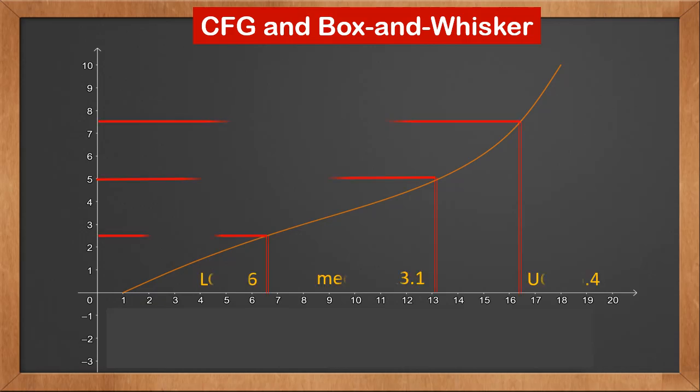We know that we can find the estimated median, LQ, and UQ from the cumulative frequency graph. We also know the minimum and maximum value, 1 and 18. So we can sketch the box and whisker plot from these. The box and the inside line are lined up with LQ, UQ, and the median. The whiskers extend from the minimum to LQ, and the maximum to UQ.